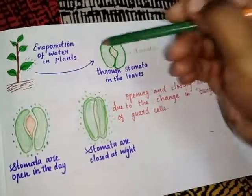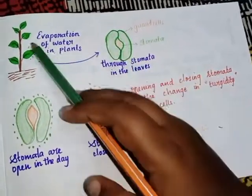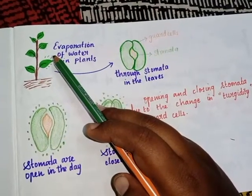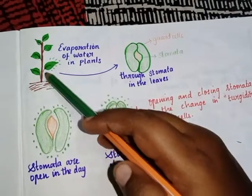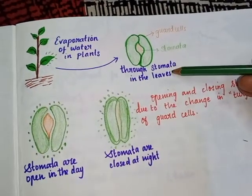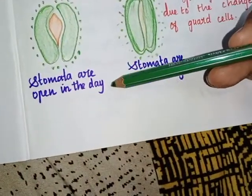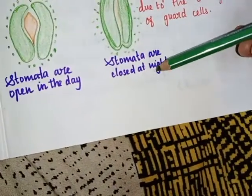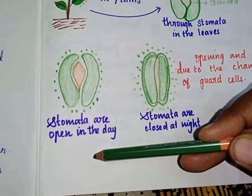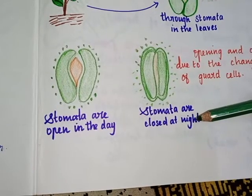Evaporation of water in plants through stomata in the leaves. What is meant by transpiration? Evaporation of water in plants through stomata in the leaves. Stomata open in the day and closed at night.